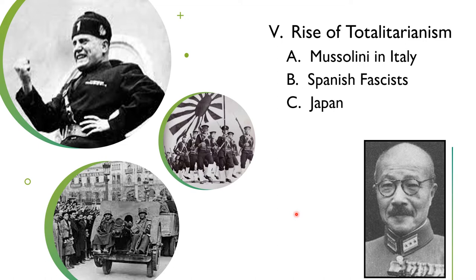Not only in Germany, but also in other countries, there was the rise of totalitarianism. The Nazi party in Germany was a type of totalitarian government. In Italy there was Mussolini. In Spain, fascist contenders created a civil war situation. And in Japan, it was a militaristic type of totalitarianism led by a very strong military.